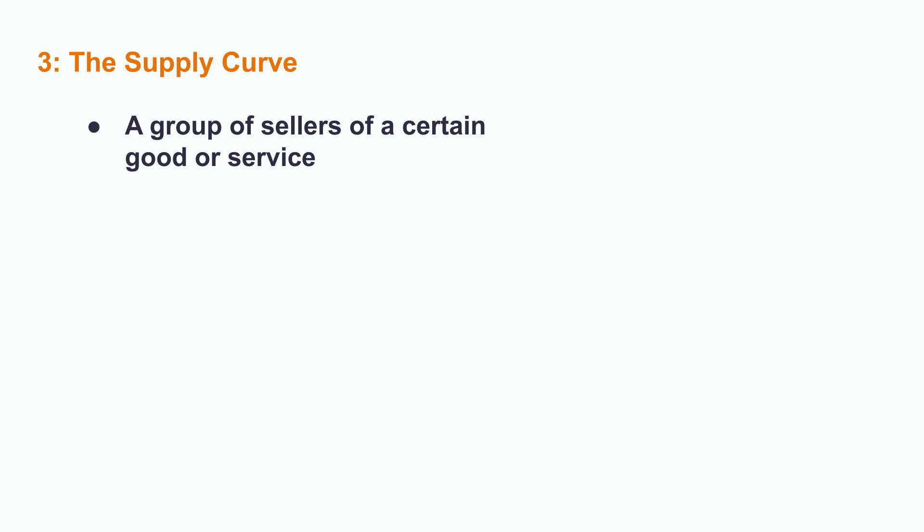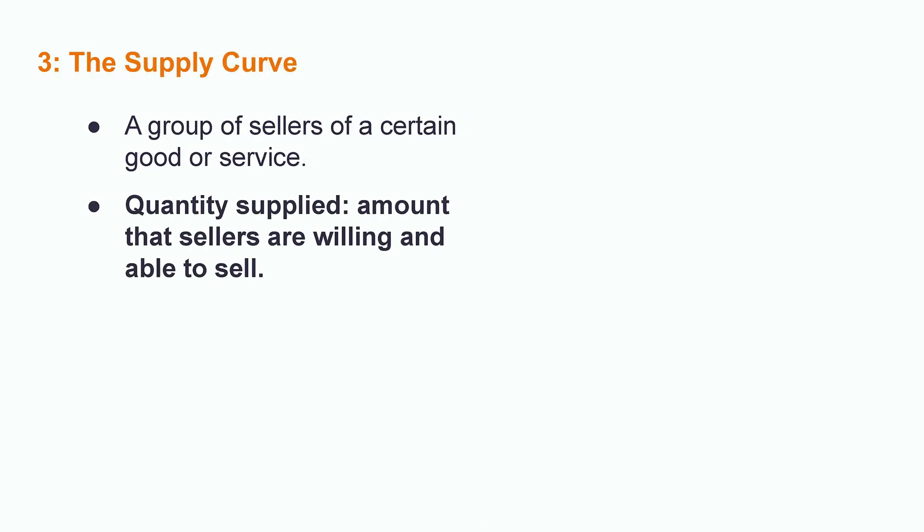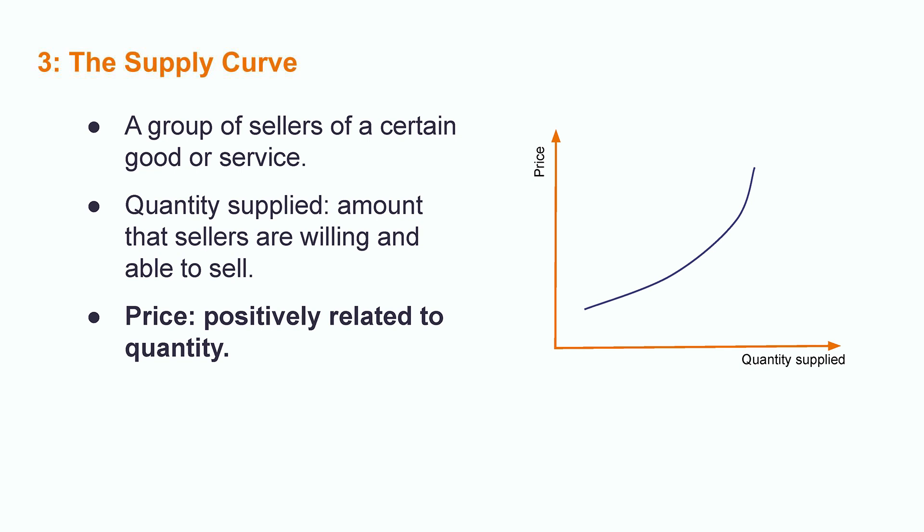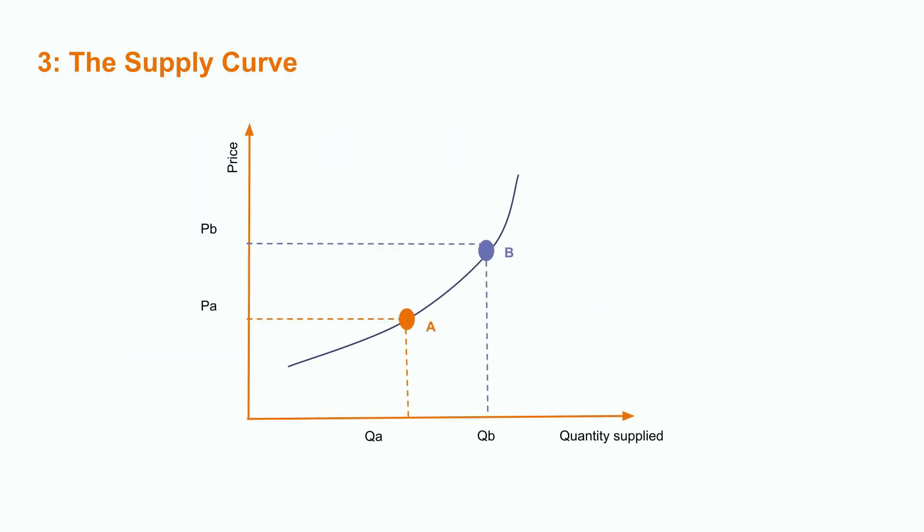Now let's discuss the supply curve. At first, this is quite similar to the case for demand. Instead of a group of buyers, we are now talking about a group of sellers. The supply is composed by the sellers of a certain product, and its quantity is the amount they are willing and able to sell. But this curve is positively related to price — the higher the price, the higher the quantity that suppliers will be willing to sell. Looking at the chart, at point B suppliers are willing to sell more because the price is higher.